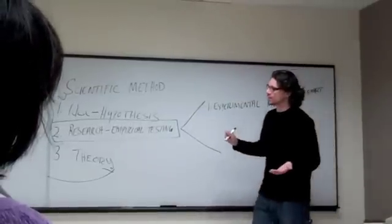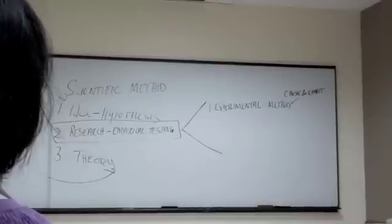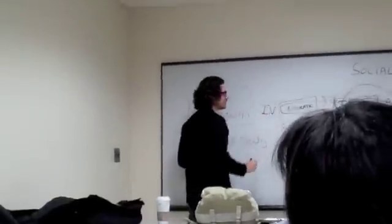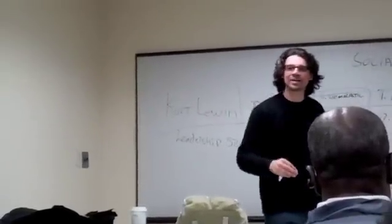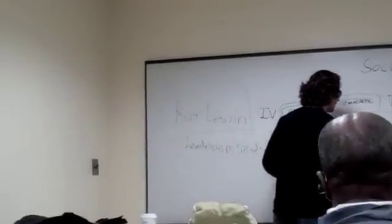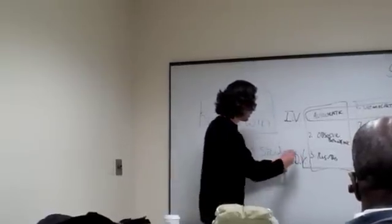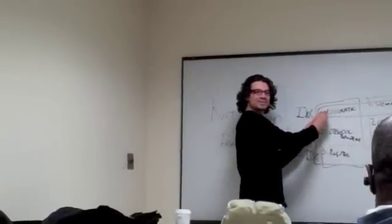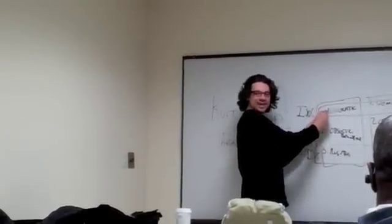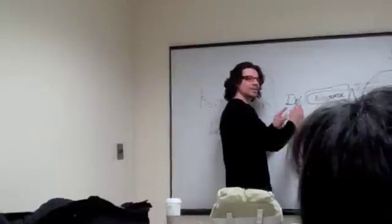And if you remember in the experimental method, we have an experimental variable. It's also called the independent variable. And that's the thing that you give each group. The independent variable. The thing you give each group. It's independent. It doesn't depend on anything else. The dependent variable are the results. This is the dependent variable. You see, the dependent variable depends on the independent variable. The results depend on the experiment, on the thing you're giving each group, right?